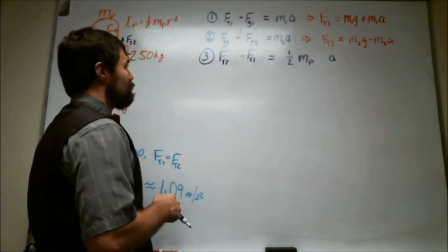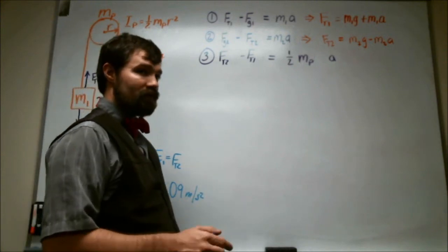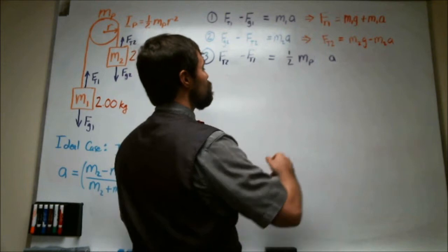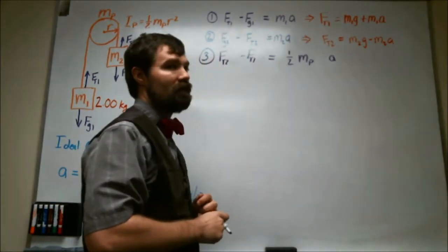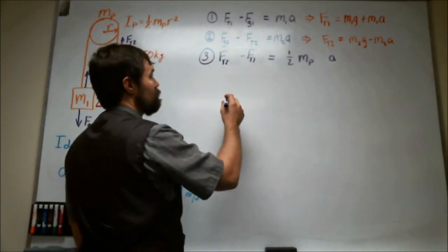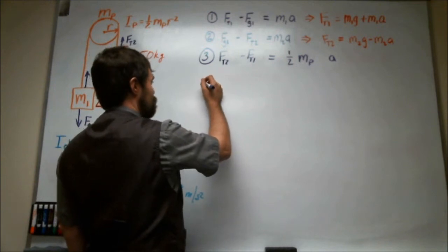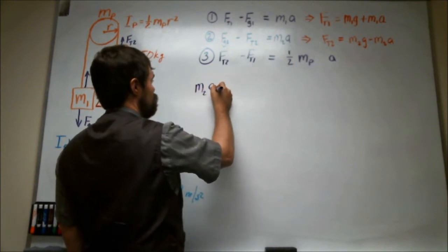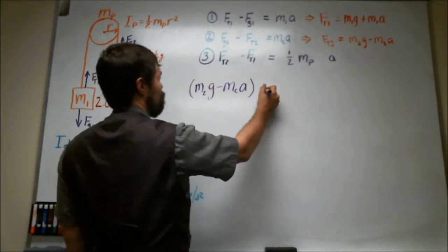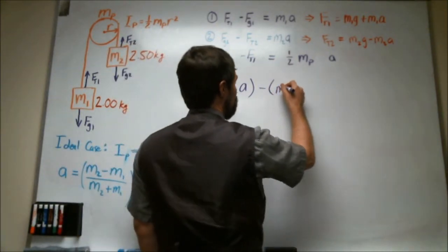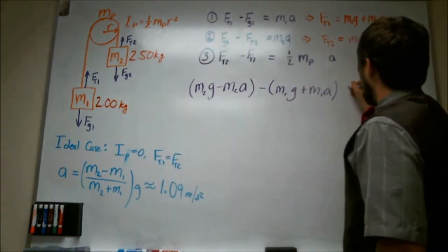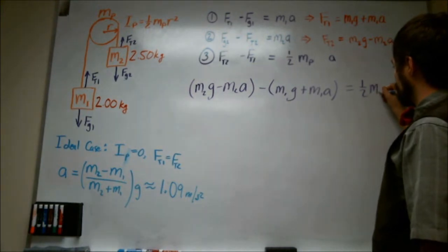Okay, so at this point we are down to three equations and three unknowns. Our unknowns are these tensions and this acceleration. So what we should do is substitute this and this into this third equation for these two forces. So what I have is M2G minus M2A minus M1G plus M1A equals one-half MpA.